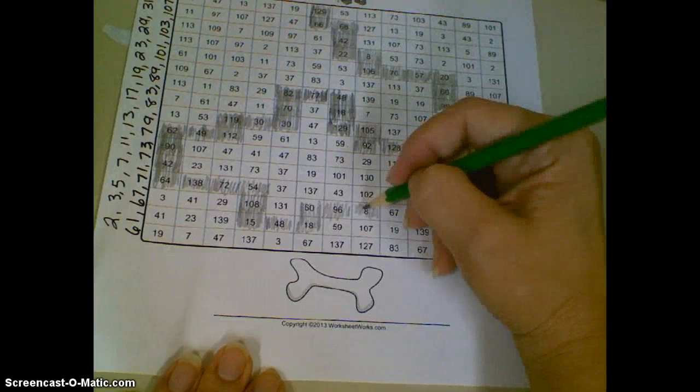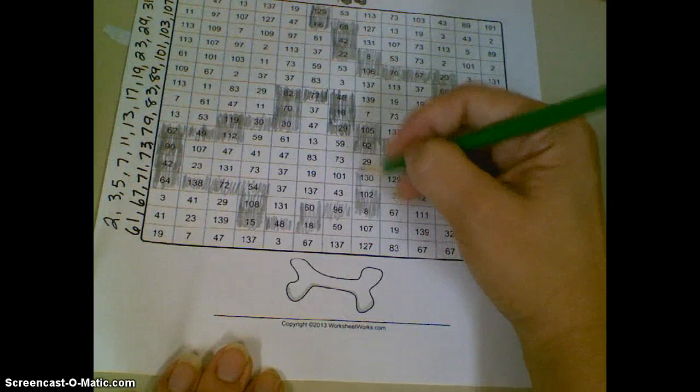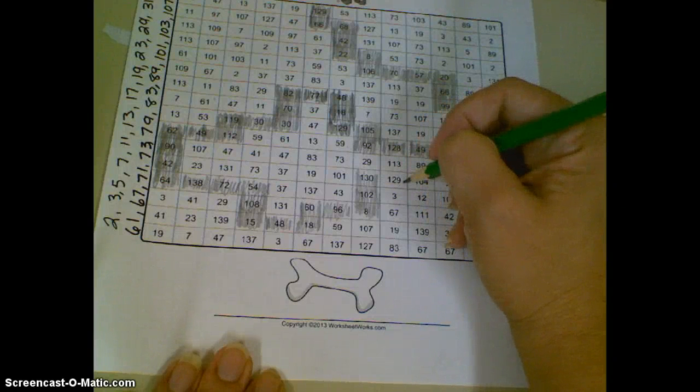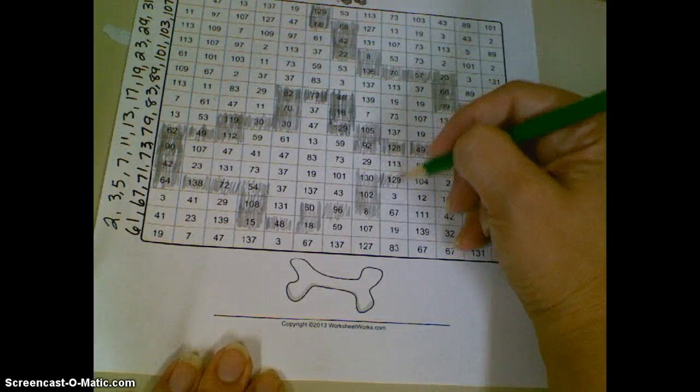We're getting close to that bone, but now we're going the other way. 102 is even, composite. 130 is even, composite. Now we have to do a little bit of thinking. I believe it's 129. We've hit that twice now. So 129 we know is composite.